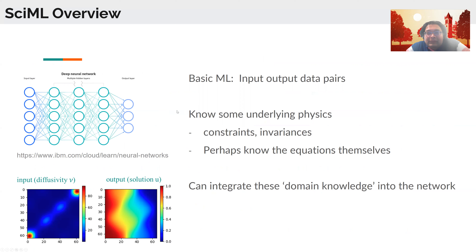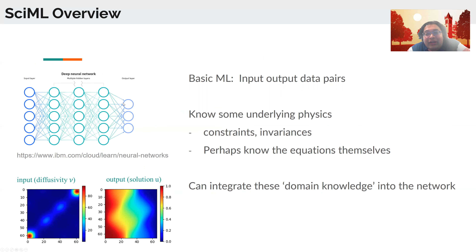For a deeper dive into what this landscape looks like, the picture on the top left is a canonical representation of a neural network — in this case a density network — with an input layer on the far left that feeds into hidden layers and then makes a prediction. In the conventional case, you need lots of input-output data pairs. For instance, to solve a heat equation — an elliptic equation — you have a field of input diffusivities and want to find the solution as a function of those diffusivities.